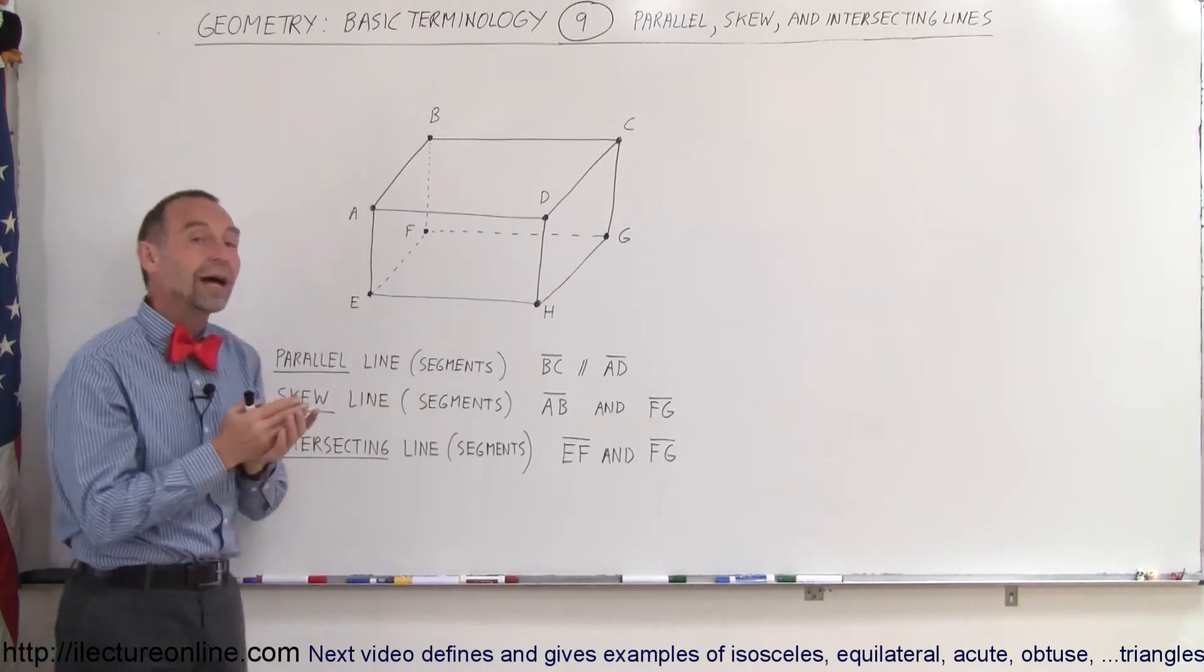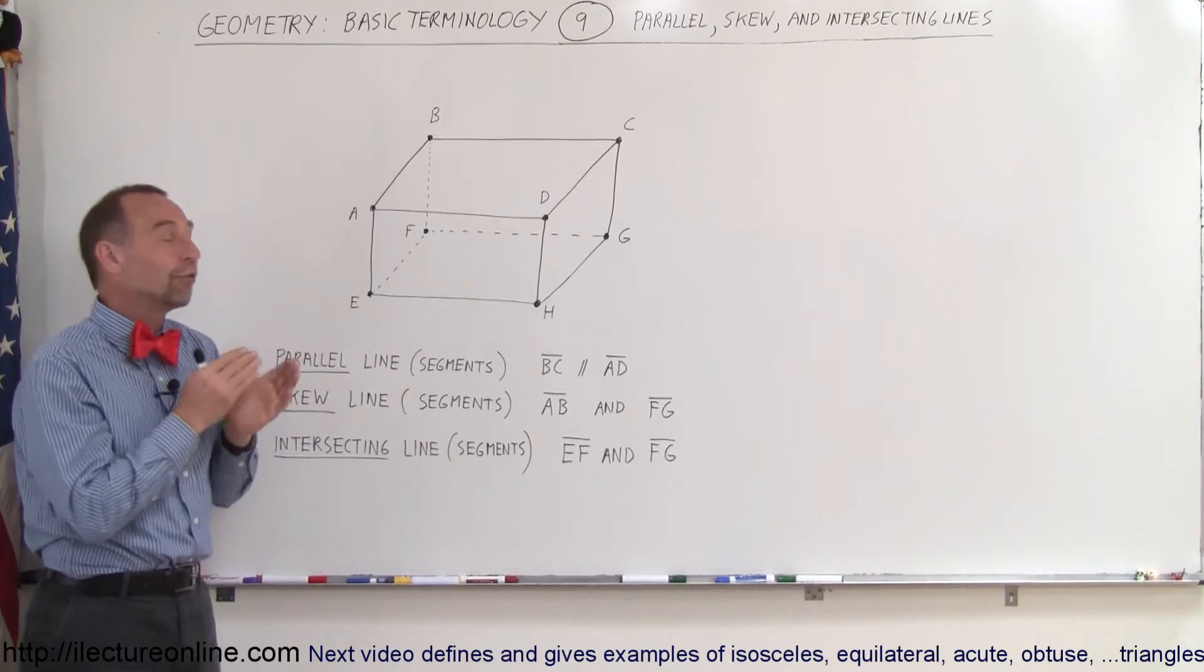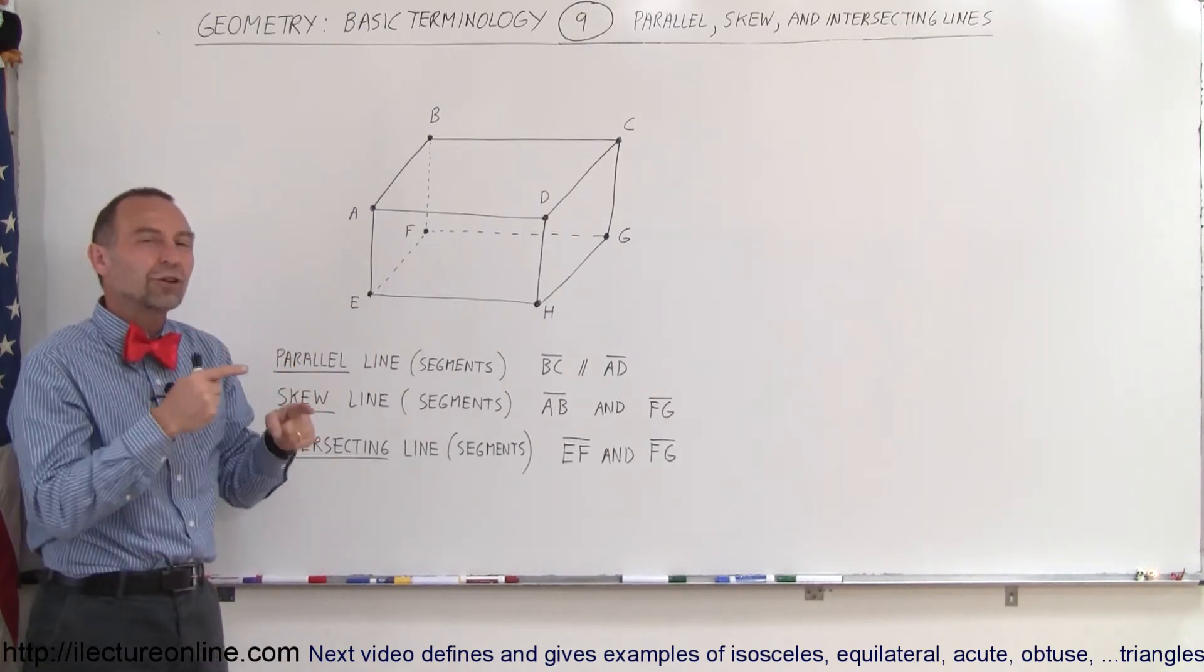Now, skew lines are lines that are not parallel to each other. In fact, there's no way for them to ever be parallel or to ever intersect. One will never cross the other.